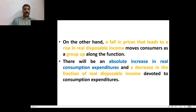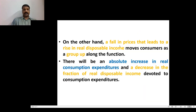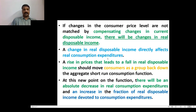A fall in prices leads to a rise in real disposable income. Earlier, a rise in prices leads to a fall in real disposable income. A fall in prices leads to a rise in real disposable income, moving most consumers as a group up along the aggregate short-term consumption function. A rise in prices that leads to a fall in real disposable income should move consumers as a group back down the aggregate short-term consumption function.